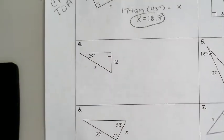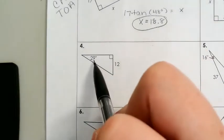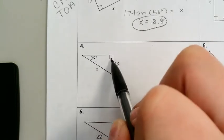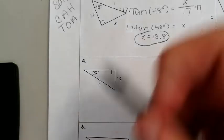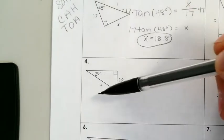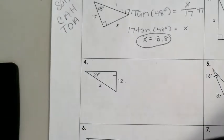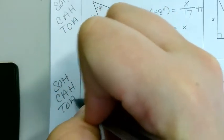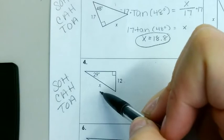Let's look at the next one. Here we have 29 degrees as an angle. A leg is 12, and the hypotenuse is X. Using SOHCAHTOA, we have our hypotenuse, so we need to use either sine or cosine because they include the hypotenuse.